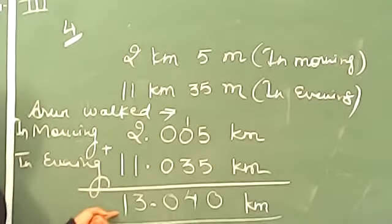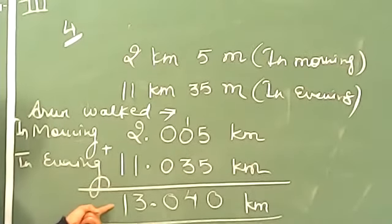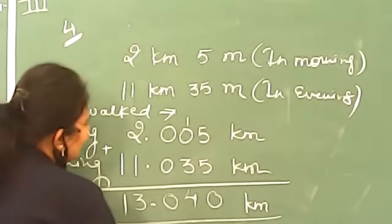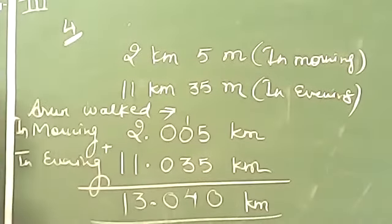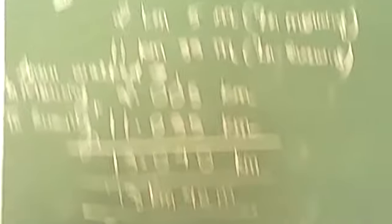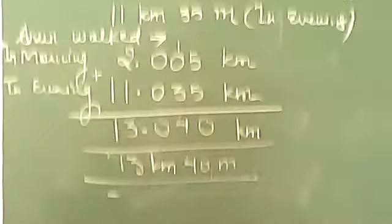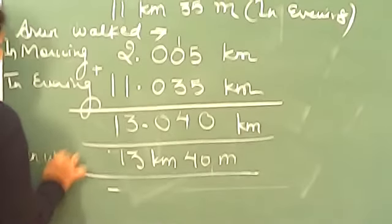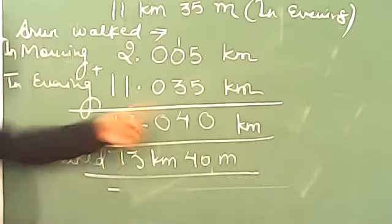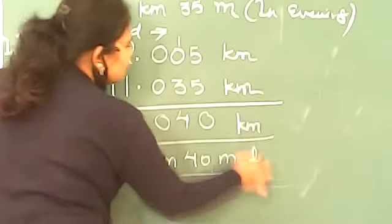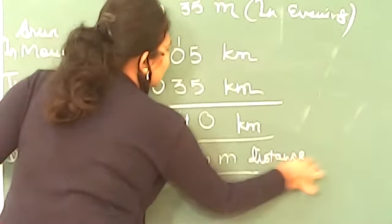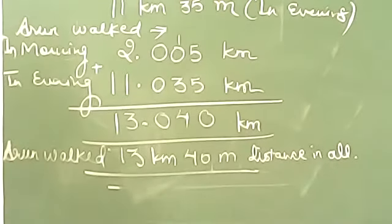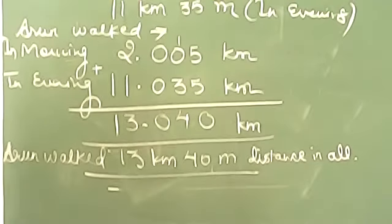So the answer is 13 kilometers 40 meters. Here is the total distance. We will write that Arun walked 13 kilometer 40 meter in all. Finish. This is the complete solution how will you write it down in the world.